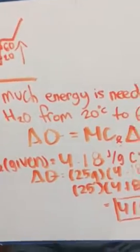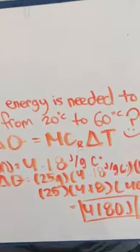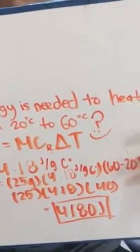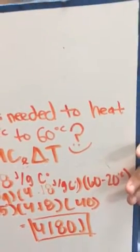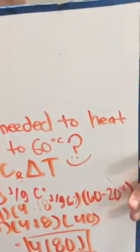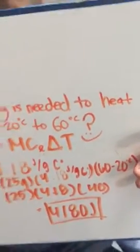So your equation comes out to be delta Q equals 25 grams times 4.18 joules over grams Celsius times 60 minus 20 Celsius. 60 minus 20 Celsius is delta T, and delta T is final minus initial temperature.